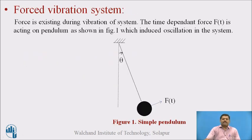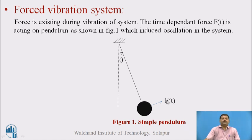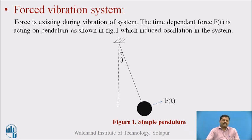This is the example which explains the forced vibration system. This is a simple pendulum shown in figure 1. This mass is subjected to a time-dependent force F(t). This force is acting during the vibration of the system, that is why it is called a forced vibration system. Earlier two videos were of free vibration. Forced vibration means during the entire vibration period, a time-dependent force is acting on the body or leading the oscillation in it.